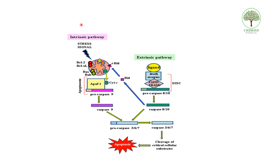For the intrinsic pathway, the key terms to remember are APAF1 and cytochrome C. APAF1 stands for apoptotic protease activating factor. Cytochrome C released into the cytosol activates caspase 9. Both pathways ultimately activate the final effector caspases 3 and 7, leading to apoptosis.